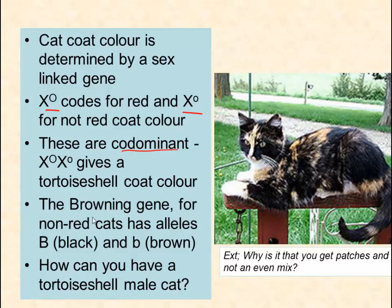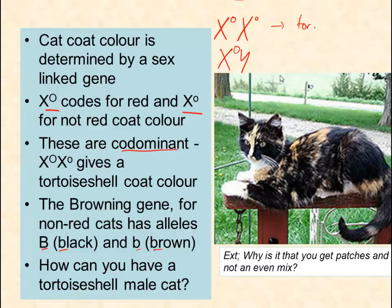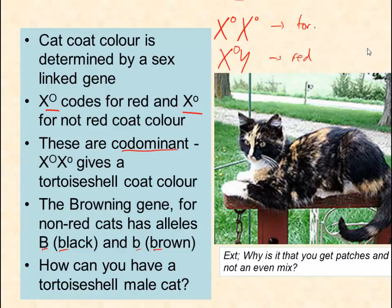The next gene is the browning gene. Big B makes you black and little b makes you brown, and big B is dominant over little b. Quick question: how can you have a tortoiseshell male cat? Because if you are X-O X-o then you become tortoiseshell, but if you are a male cat, how can you have that? If you are X-O Y you are red, or X-o Y you are black or brown. How can you have a male tortoiseshell cat?